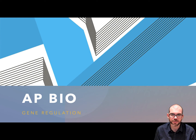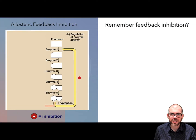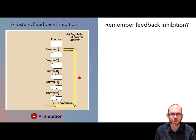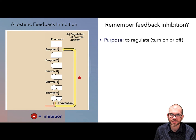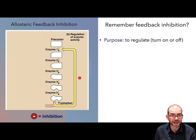Hi everyone, this lesson is on gene regulation. I want us to think back to feedback inhibition, specifically allosteric feedback. A reminder that this is how cells regulate metabolic pathways. You would have a precursor molecule which will then cause a cascade of enzymatic activity to produce some kind of end product. In this example, it is tryptophan. The quantity of tryptophan can act as an allosteric inhibitor to shut down the entire process. Thinking globally, the purpose of this is just to have a measure of regulation to turn things on or off.